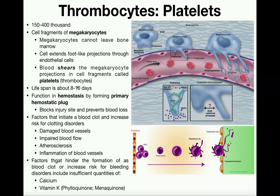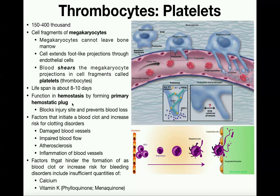The thrombocyte or platelet functions in hemostasis, preventing blood loss by forming a primary hemostatic plug. The platelets are going to wall off the injury site to prevent blood loss, but then they're also going to trigger coagulation so that we get a clot to further prevent that blood loss, because we need to keep the blood in the vasculature.